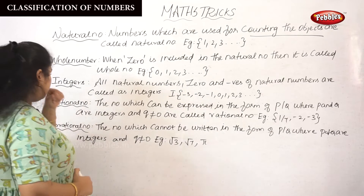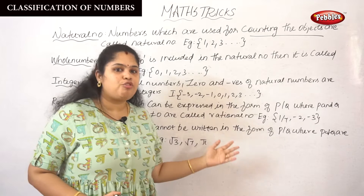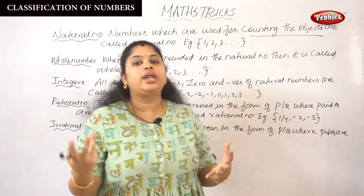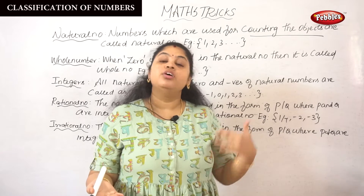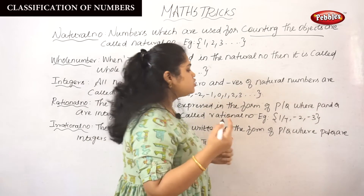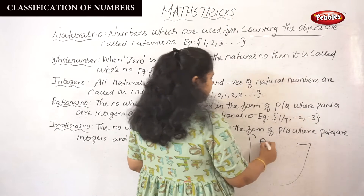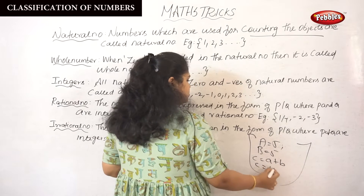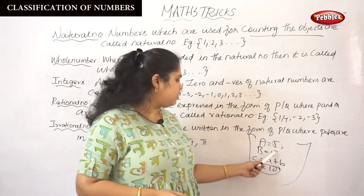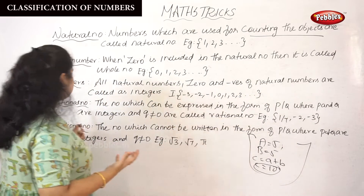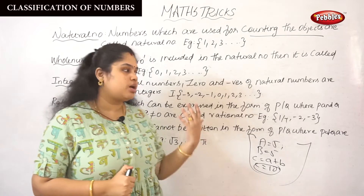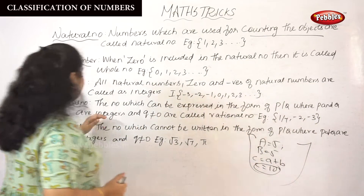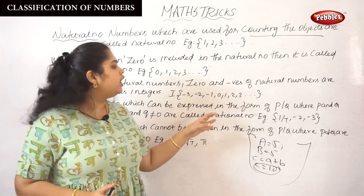Next, rational number. A rational number is a number which can be expressed in the form of P/Q. For example, we assign numbers to characters — A equals 5, B equals 5, then C equals A plus B, which is 10. This type of representation is called a rational number. The number which can be expressed in the form P/Q where P and Q are integers and Q is not equal to 0 is called a rational number.